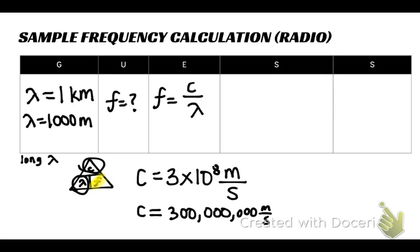So frequency equals 3 times 10 to the 8th meters per second over 1,000 meters. So when I divide these out, my units of meters are going to cancel.